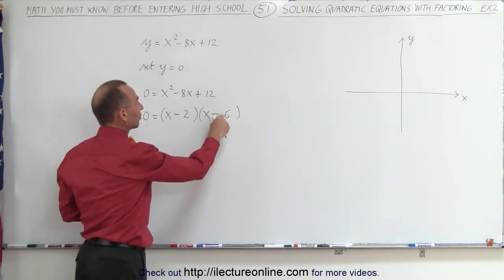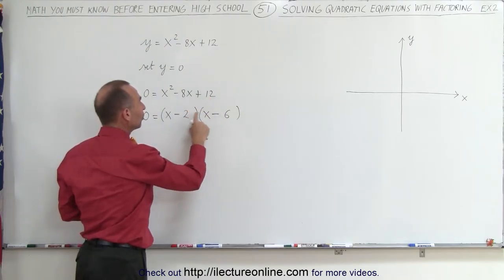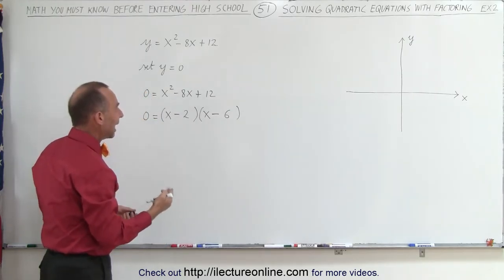Negative 2 times negative 6 is positive 12, and negative 2 plus negative 6 is negative 8. So that would now allow us to find x.